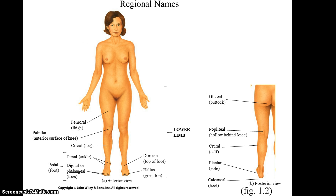When you look at the lower limbs, on the anterior side you have the femoral region for the thigh, the patellar region for the kneecap, the crural region for the leg. The pedal is the word used to describe the entire foot, which can also be broken down to the tarsal or ankles, the digital or phalangeal regions for the toes. The top of the foot is referred to as the dorsum, while the bottom of the foot is called the plantar.